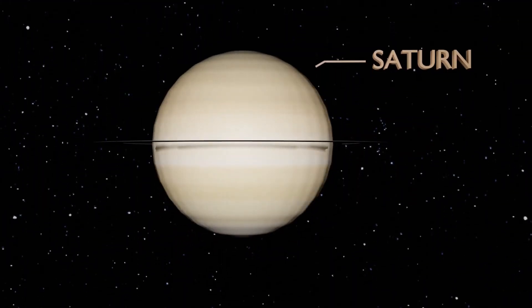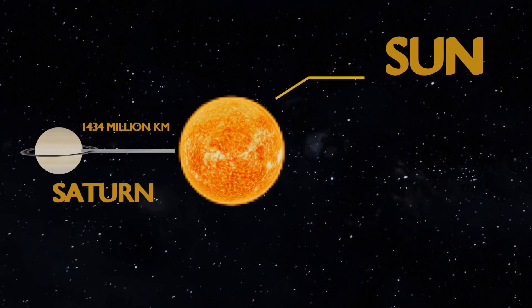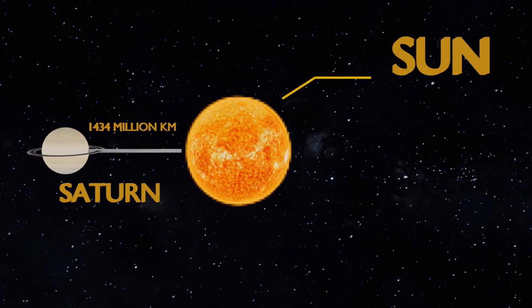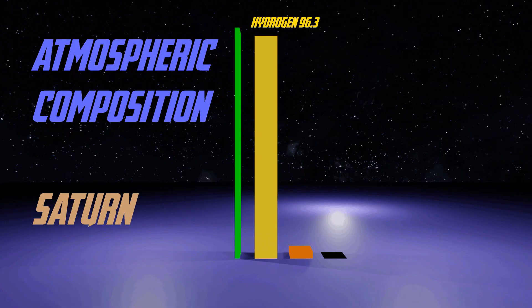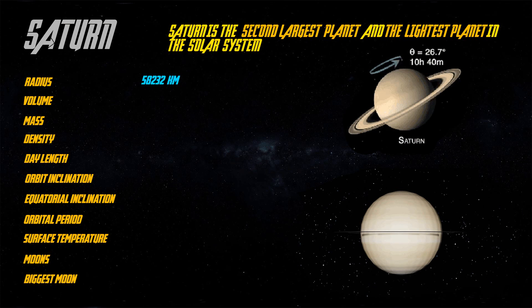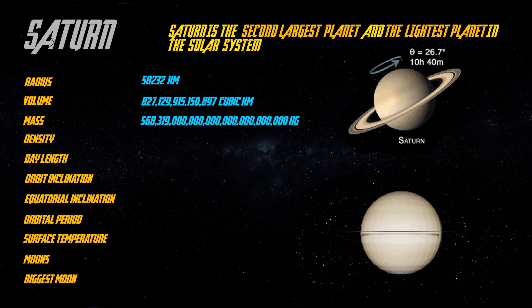Saturn is the second largest planet of our solar system. It is 1434 million kilometers from the Sun. Its atmosphere is mainly made up of hydrogen and helium. Saturn is the lightest planet of our solar system and has visible rings. Saturn's rings consist of ice cubes.